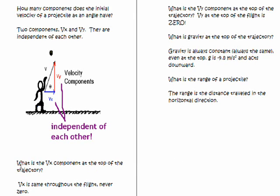And here's some questions. What is VX at the top of the trajectory? VX is the same through all the flight. It's never zero. So if it starts out at 10 meters per second, it will be 10 meters per second at the top.